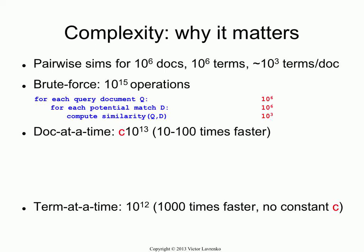This is without an index — just doing all pairwise comparisons. So what if you did use an index? Let's take the doc-at-a-time strategy. What are we going to do in doc-at-a-time? We're going to take every query document — and we have a million of them — and run that document as a query against the index. I'm not counting the cost of producing the index, because it's minuscule compared to the similarities we're doing. So we have the index pre-built.